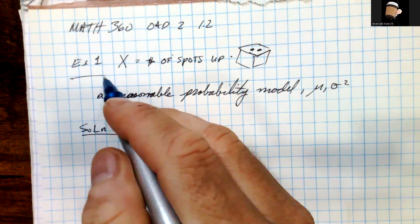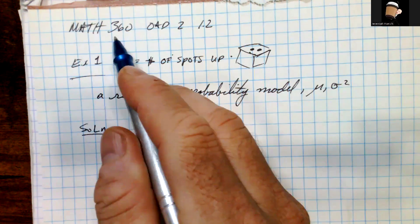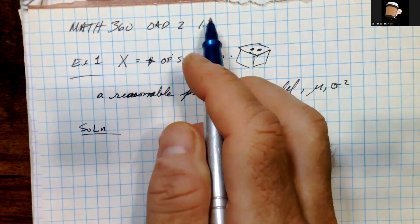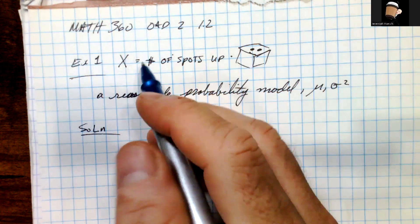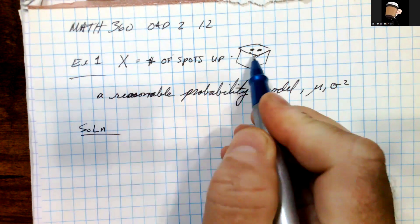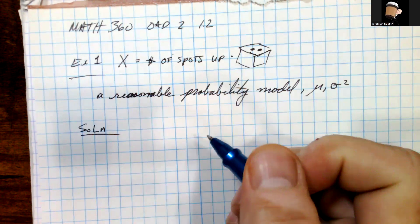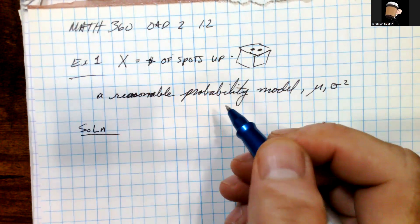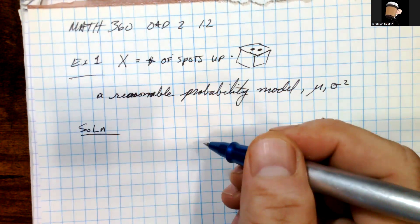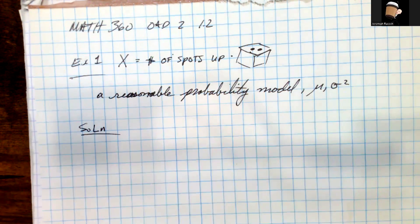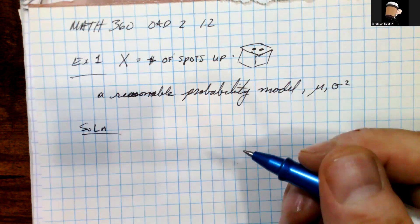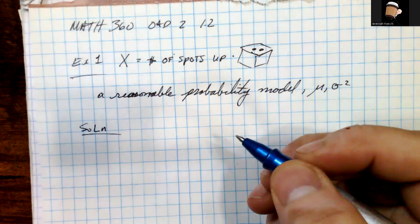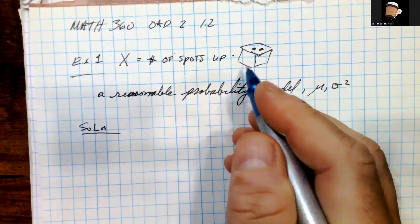Hi, welcome back. This is Example 1 from Math 360, 1-8-2, Section 1.2. In this example, we want to know if X is equal to the number of spots up on a dice, and this is a fair six-sided dice. We need to create a reasonable PMF — the probability mass function — and then compute the mean and variance for this experiment.